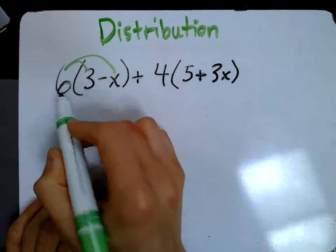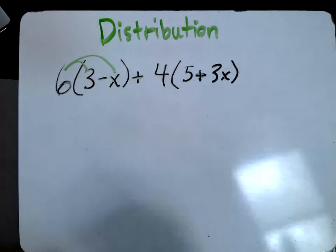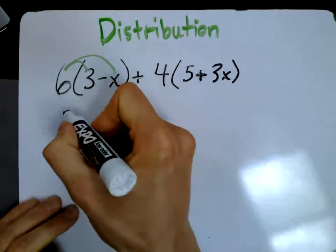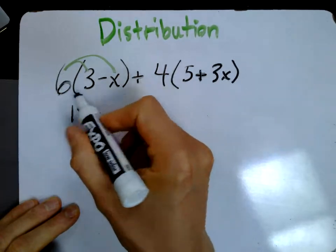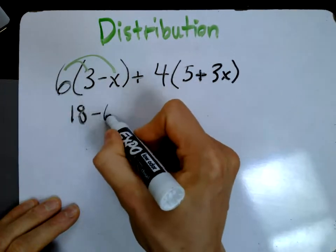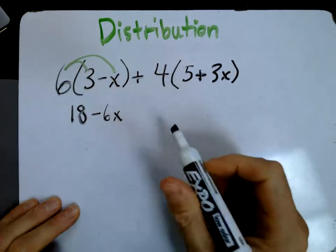Right, so I'm going to rewrite this on the line below. Six times three, that's 18, and then I've got a minus, I'll just rewrite that, and then six times x, that's 6x.